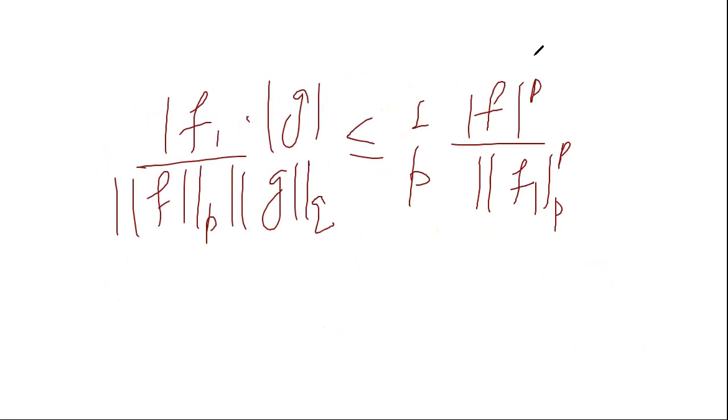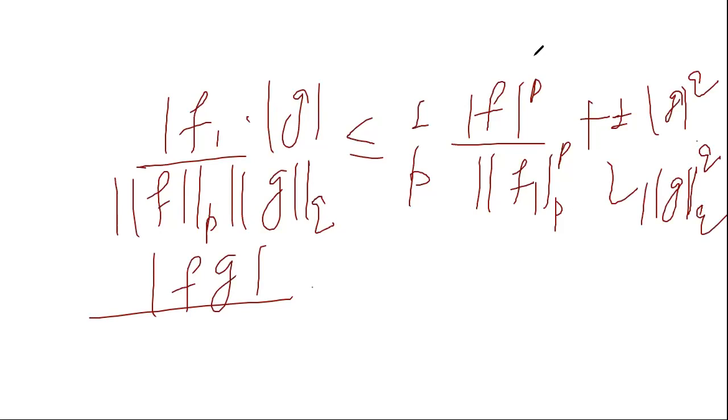Power p - A raised to power p upon p - so one factor of power will come. Similarly 1 by q, mod of G raised to power q upon norm of G, and here q. This is 1 by p, here is 1 by q.